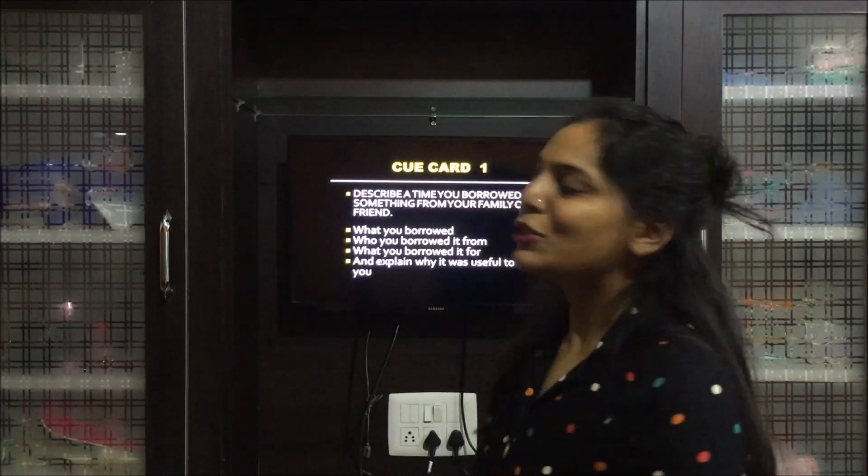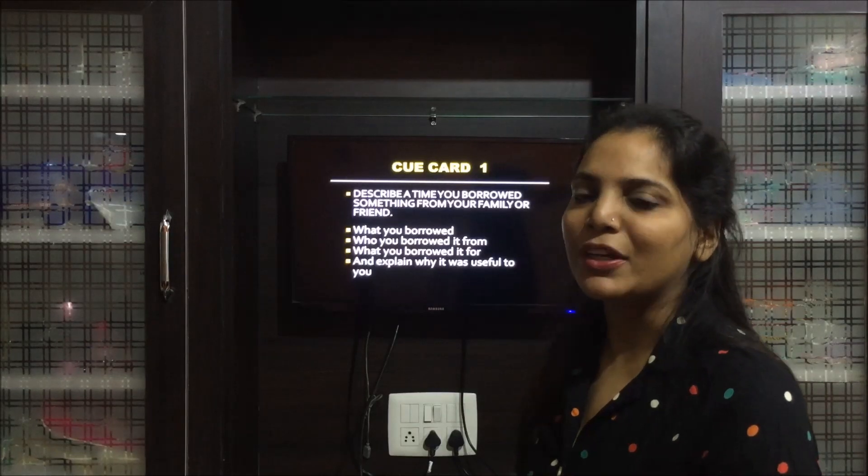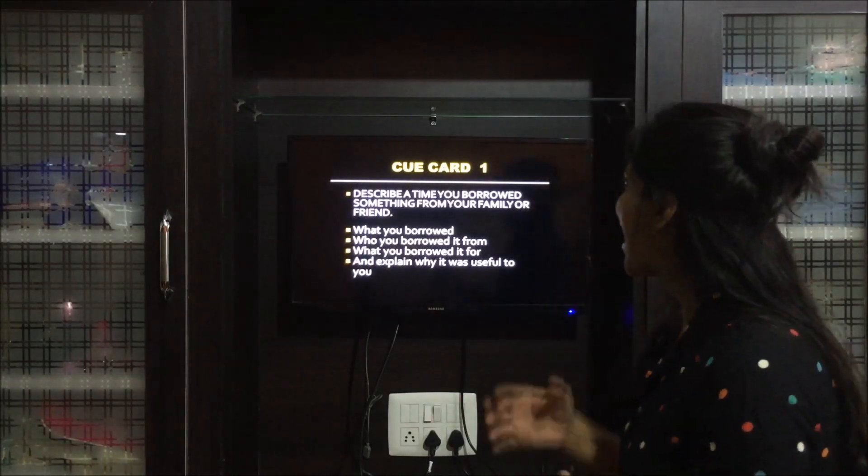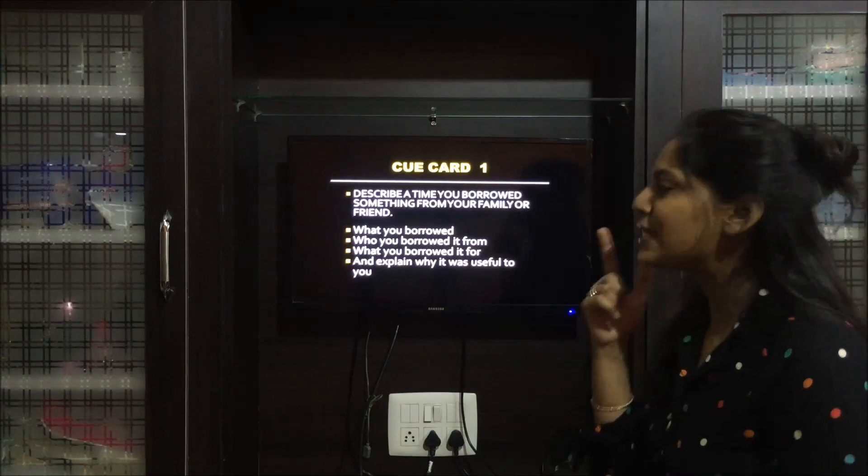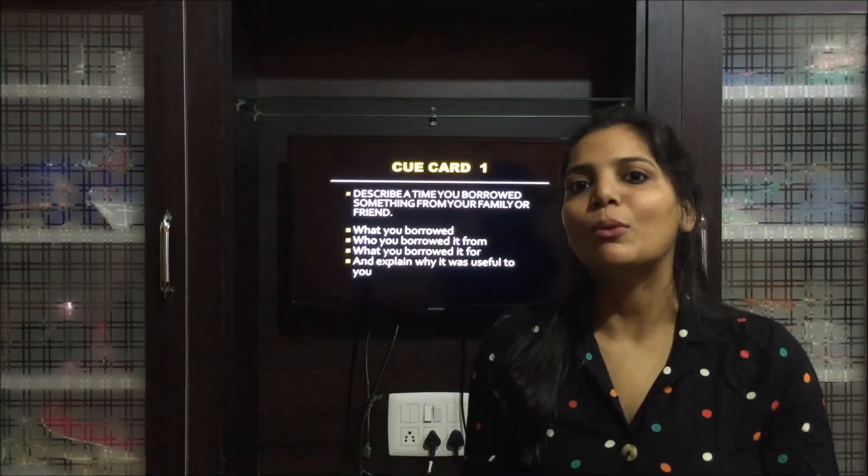We are going to have a cue card discussion today. A cue card is a topic given to you in the exam wherein you have one minute to prepare and you have to speak on the topic for one to two minutes. We try to prepare ourselves for speaking for two minutes so that in the examination hall we are able to do so. The topic today is: describe a time you borrowed something from your family or friend.